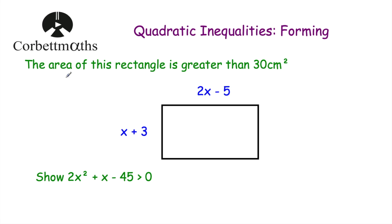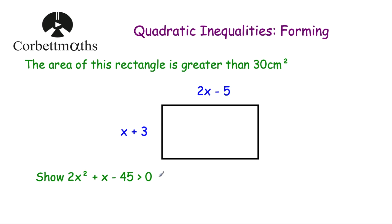Here's our first example. It says the area of this rectangle is greater than 30 centimetres squared. We've got the length as 2x minus 5 centimetres and the width as x plus 3 centimetres, and we've been asked to show that 2x squared plus x subtract 45 is greater than 0.